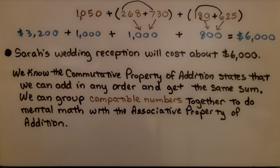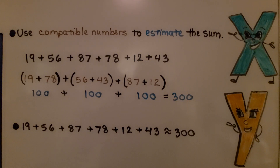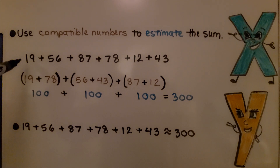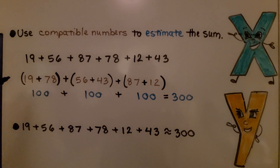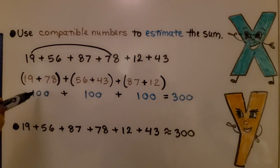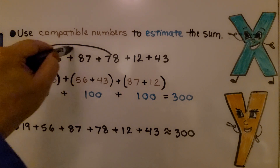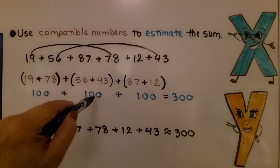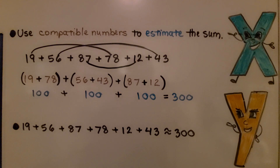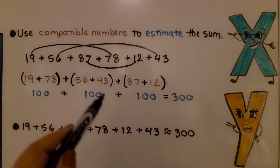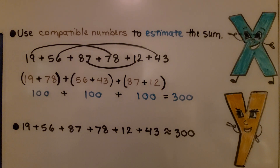The commutative property of addition states that we can add in any order and get the same sum. We can group compatible numbers together to do mental math using the associative property of addition. For example, with 19 + 56 + 87 + 78 + 12 + 43, we group 19 with 78 to get about 100, 56 with 43 to get about another 100, and 87 with 12 to get about 100. All added up, that's approximately 300.